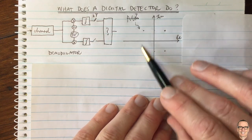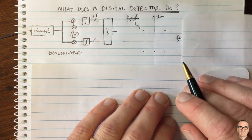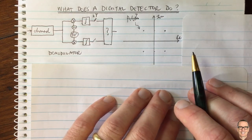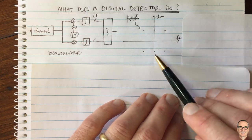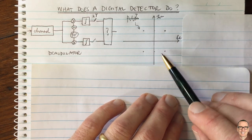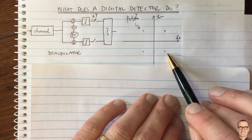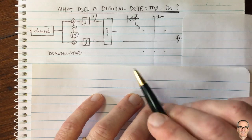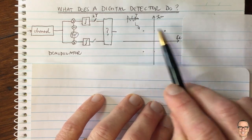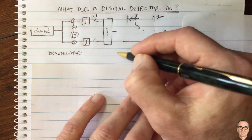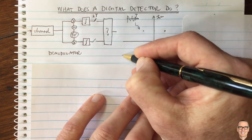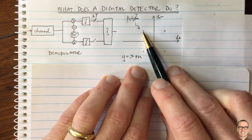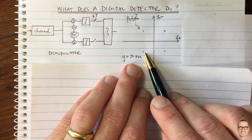If we had four different symbols as in QPSK — quadrature phase shift keying — here are the four signals on our constellation diagram. In the detector, with an additive white Gaussian noise channel, the output Y equals X plus N. I've drawn Y equals X here, but then there's noise.